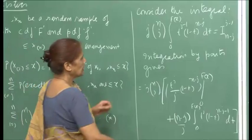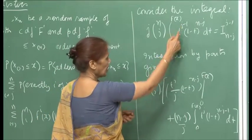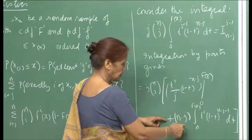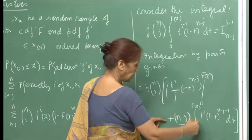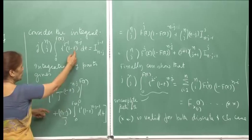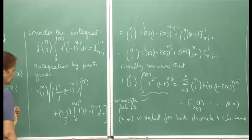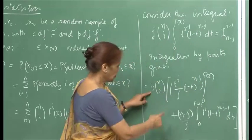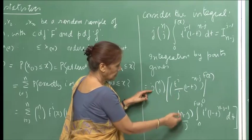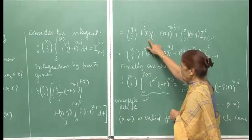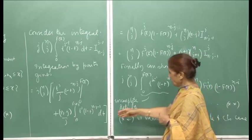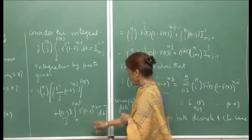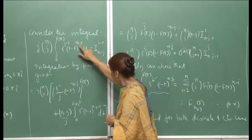Integration by parts gives: treating t^{j-1} as the first function, the integral becomes (t^j / j)(1-t)^{n-j} evaluated from 0 to F(x), plus (n-j)/j times the integral from 0 to F(x) of t^j (1-t)^{n-j-1} dt. At 0 this is 0, and the j cancels out, leaving n choose j times F(x)^j (1-F(x))^{n-j} plus a new integral term I(j, n-j-1).